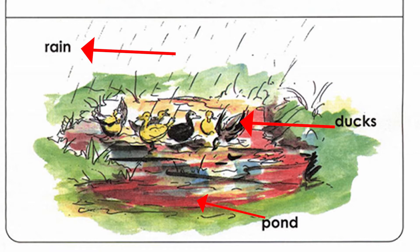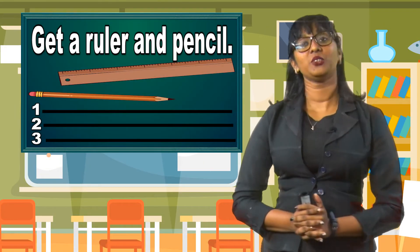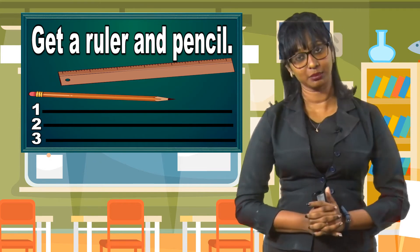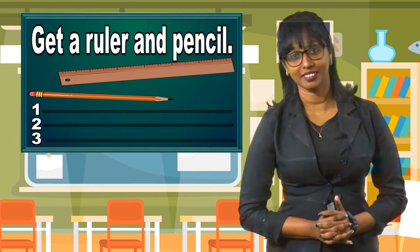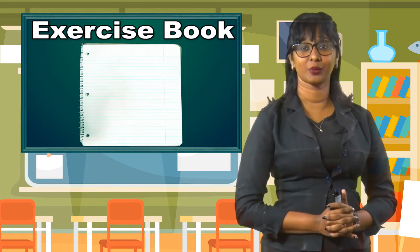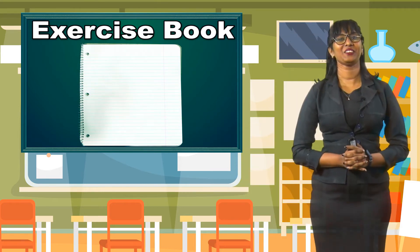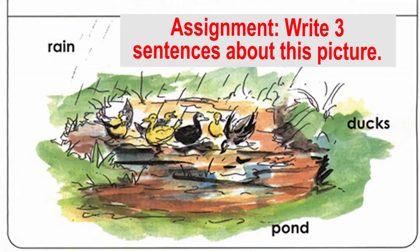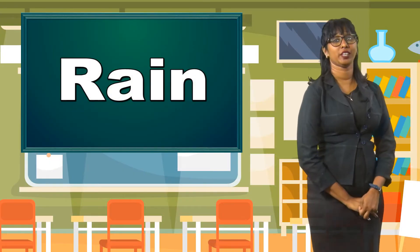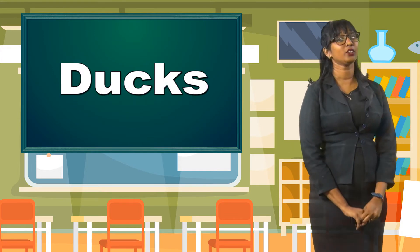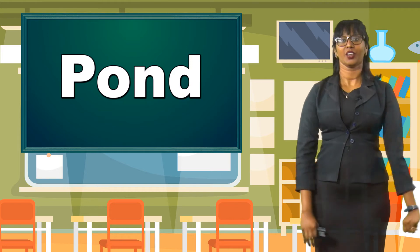Are you ready to write your sentences on this picture? Boys and girls, once again, if you are using your textbook, you are going to take your ruler and draw three lines. If you do not have a textbook, you can do it in your exercise book. You are going to write three sentences about picture number two — about the rain, about the ducks, and about the pond.